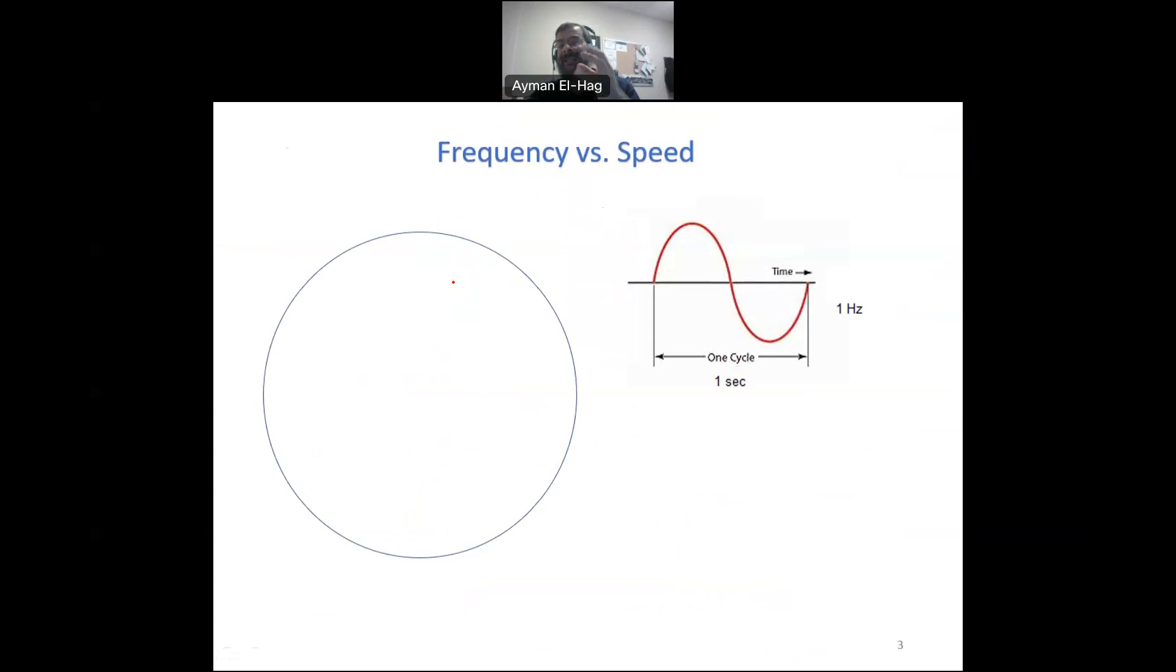To start with, let me just establish something here before we move on, which is the frequency and the speed. We are talking about rotating magnetic field, so something that rotates in a circle. Assume that you are at this position A and you make one full revolution in one second. So you finished one revolution in one second. So we can represent that as a sinusoidal.